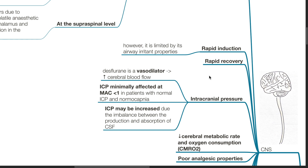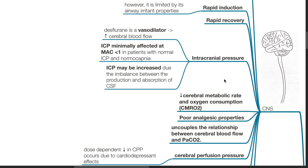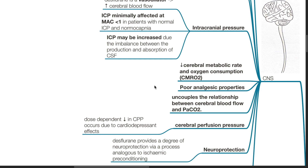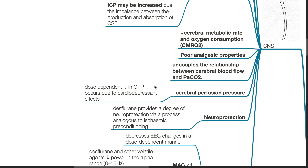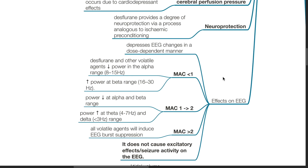ICP may be increased due to the imbalance between the production and absorption of CSF. There is a decrease in cerebral metabolic rate and oxygen consumption. Desflurane has poor analgesic effects. Desflurane uncouples the relationship between cerebral blood flow and PaCO2. There is a dose-dependent decrease in cerebral perfusion pressure due to cardio-depressant effects. Desflurane provides a degree of neural protection via a process analogous to ischemic preconditioning. There is dose-dependent depression of EEG similar to sevoflurane. Desflurane does not cause excitatory effects or seizure activity on EEG.